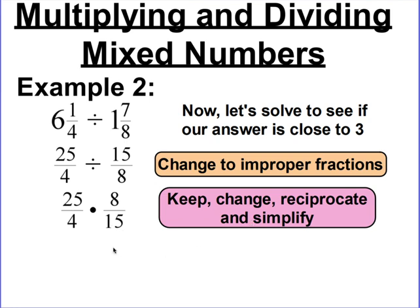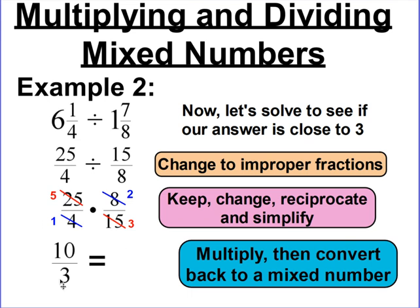Now we can simplify — looking diagonally and up and down. 8 and 4 can both be divided by 4, and 25 and 15 can both be divided by 5. So 25 divided by 5 is 5, 15 divided by 5 is 3, 8 divided by 4 is 2, and 4 divided by 4 is 1. Now multiply sideways: 5 times 2 is 10, and 1 times 3 is 3, giving us 10 over 3. Last step: 3 goes into 10 three times with 1 remainder, so our final answer is 3 and 1 third. Our estimate was 3, and 3 and 1 third is really close to 3, so we did our work right. The only new thing in this lesson is changing into improper fractions before doing all of our multiplying and dividing rules.